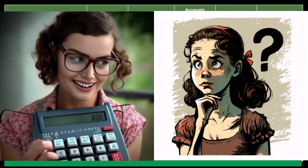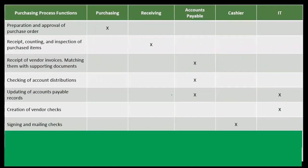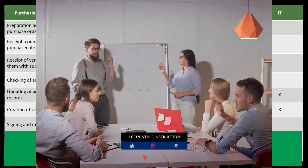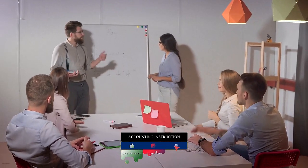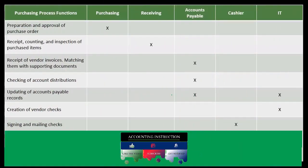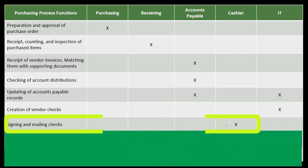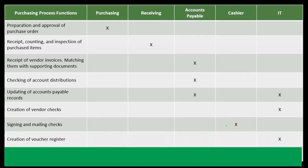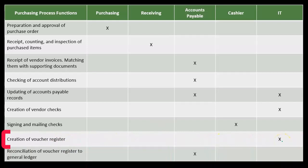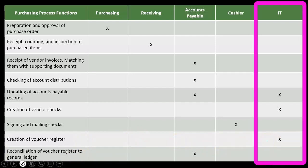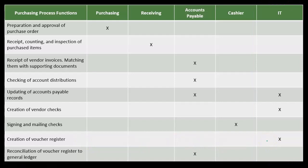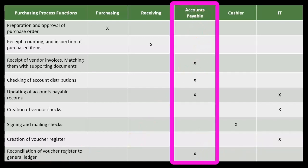Smaller companies will have fewer internal controls and won't be able to implement all the primary activities of a good control system, since those include separation or segregation of duties — and they simply won't have the personnel. However, they do want some key components: the signing of checks by the owner and possibly doing the bank reconciliation process are items to consider for smaller companies. The IT function handles creation of the voucher register, and then the reconciliation of the voucher register to the general ledger is handled in accounts payable, tying those two things together.